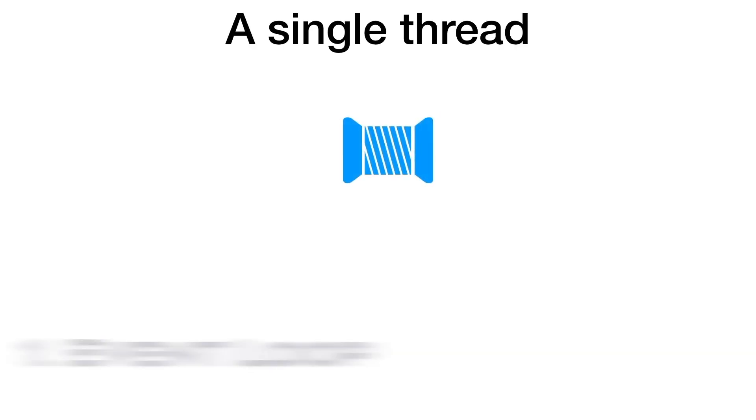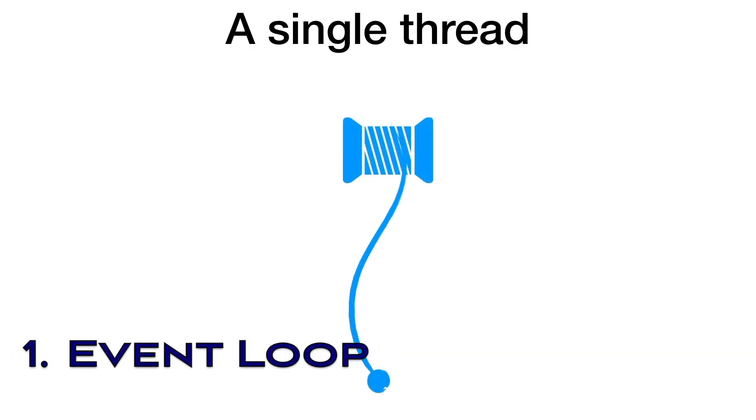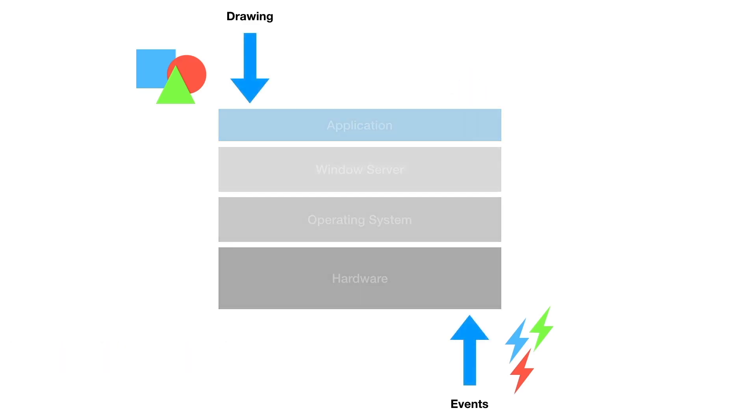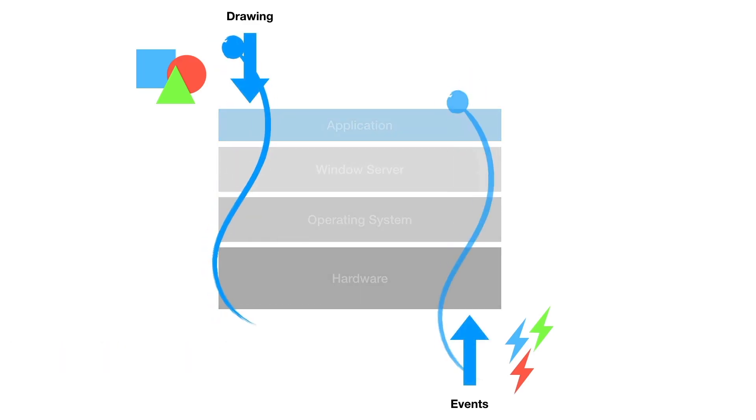In the lesson on event loop, we will focus on the single-threaded nature of a UI and explain why that is the case. We will then focus on the most important construct — the event loop — the primary workhorse of a UI.